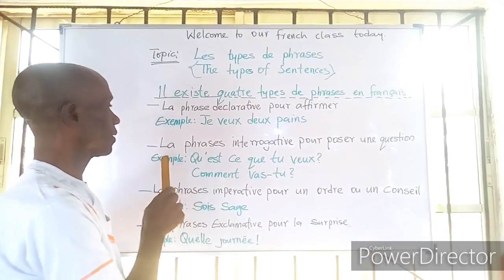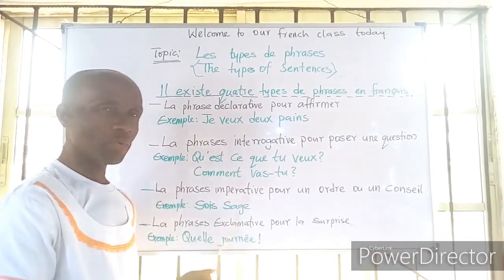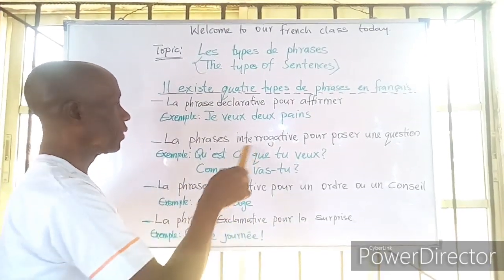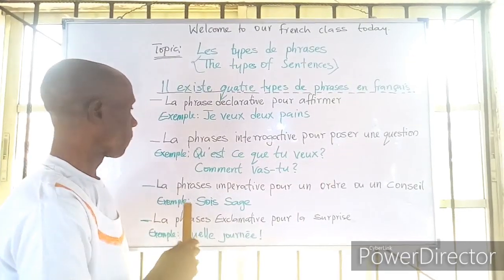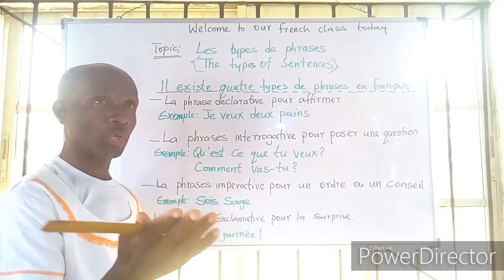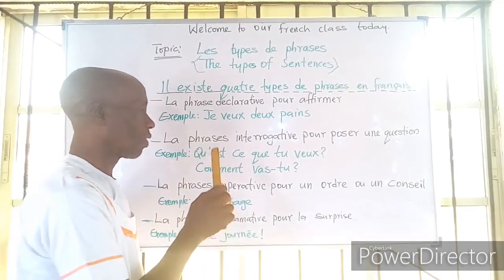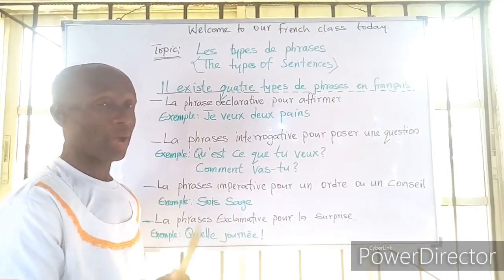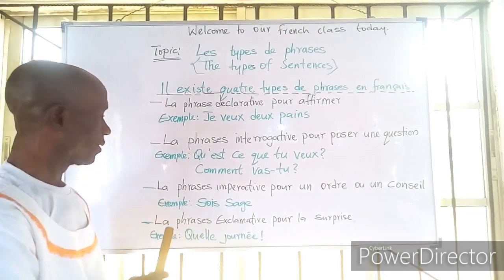The second one is la phrase interrogative pour poser une question — that is to say, with this you can ask a question. For example: 'Qu'est-ce que tu veux?' — that means what do you need? The second example is 'Comment vas-tu?' — that means how are you, or how do you feel?